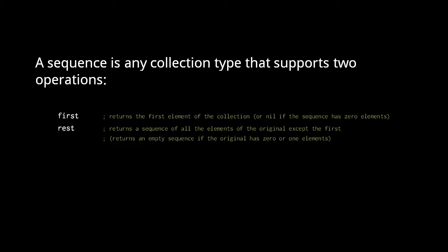The first function returns the first element of the collection. Calling first on a sequence of zero elements returns nil. The rest function returns a copy of the sequence with the first element removed. Calling rest on a sequence with no elements or just one element returns an empty sequence.